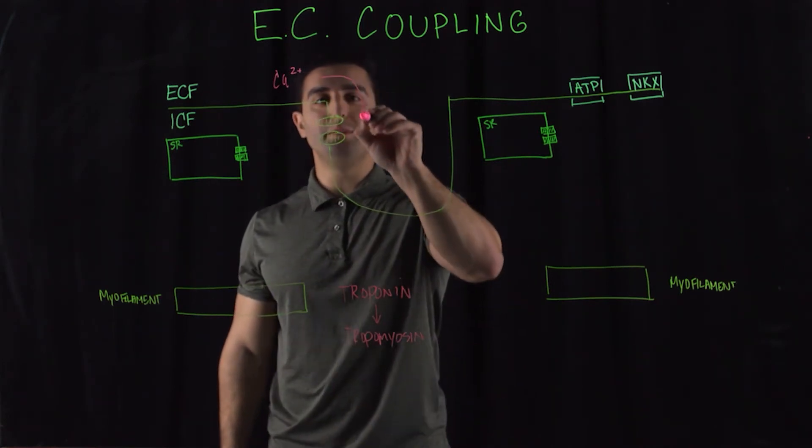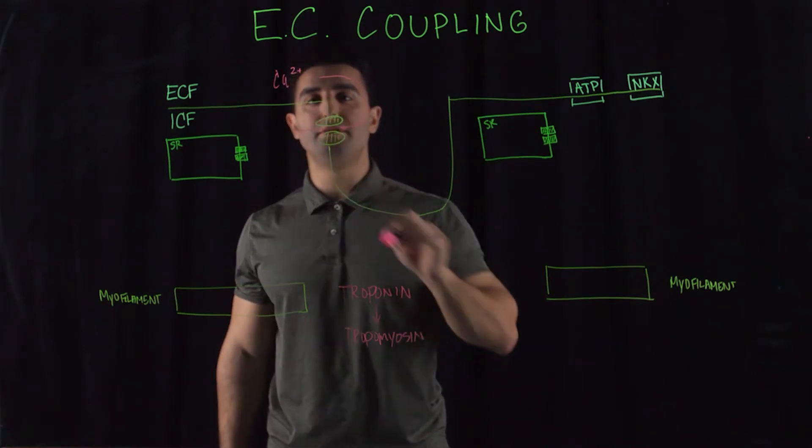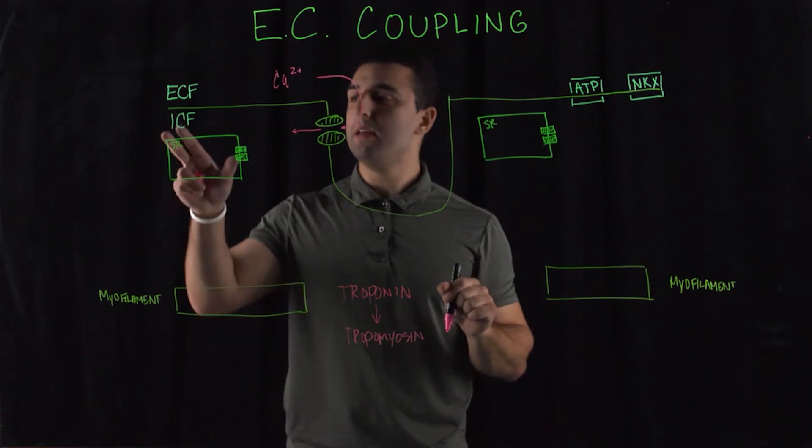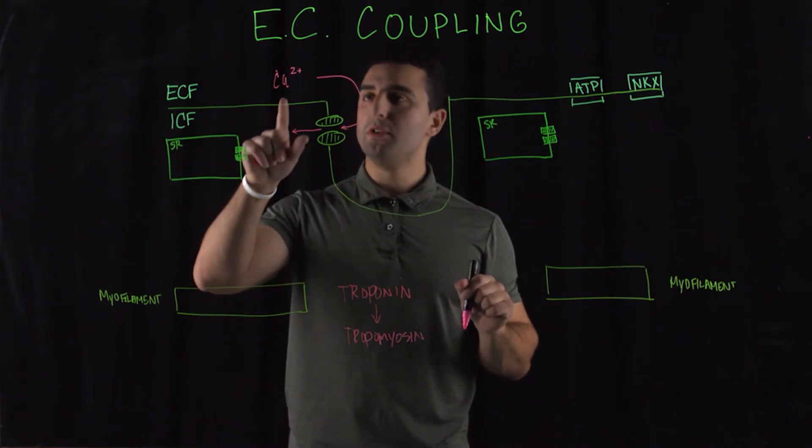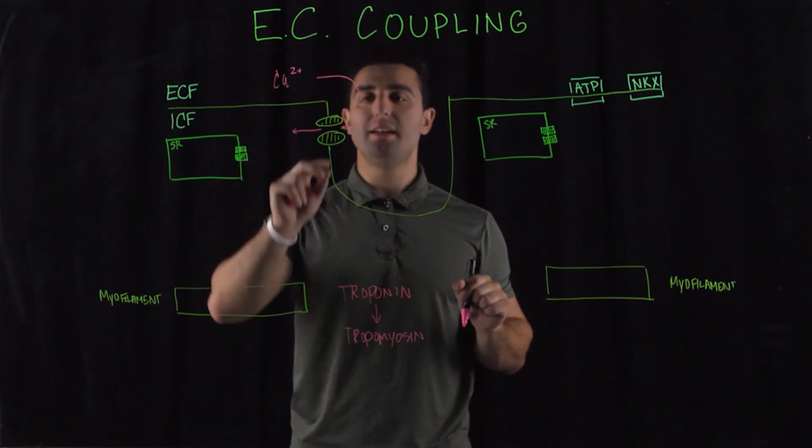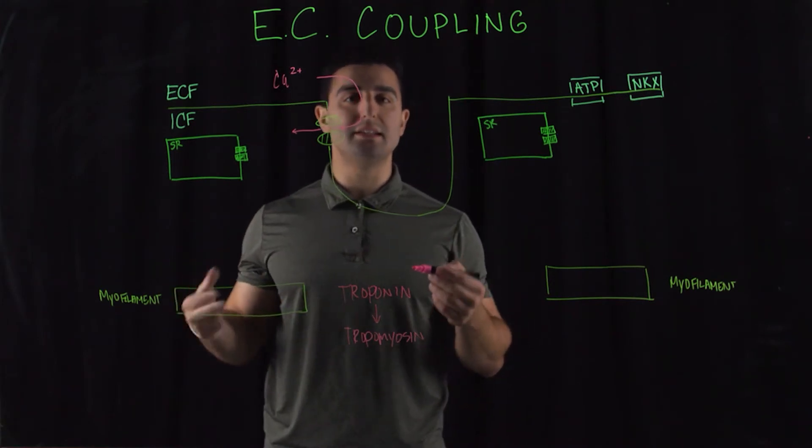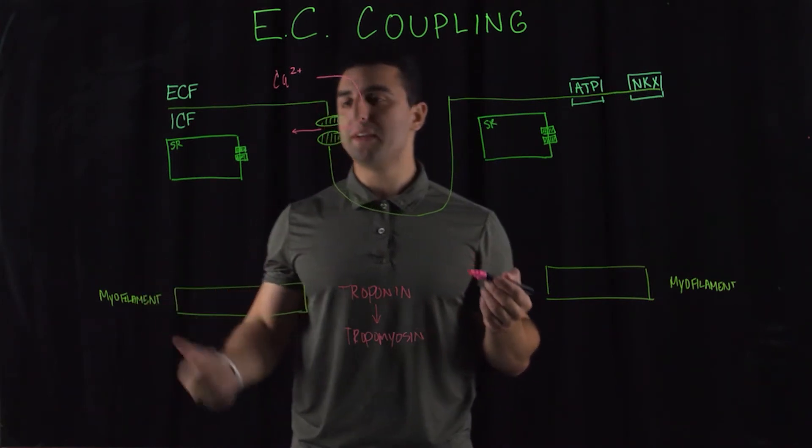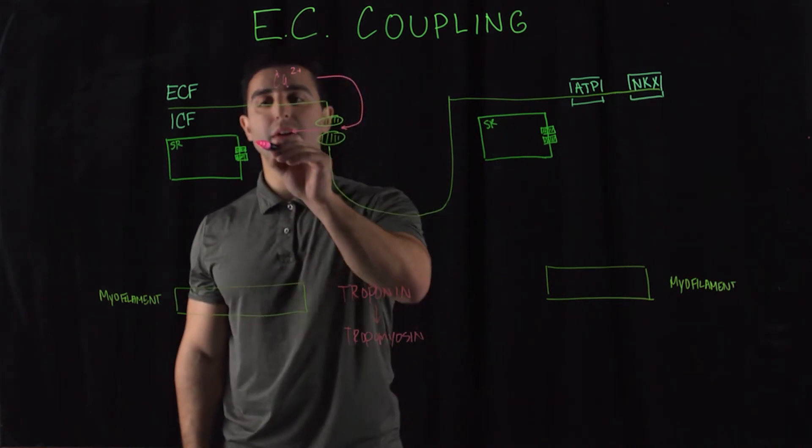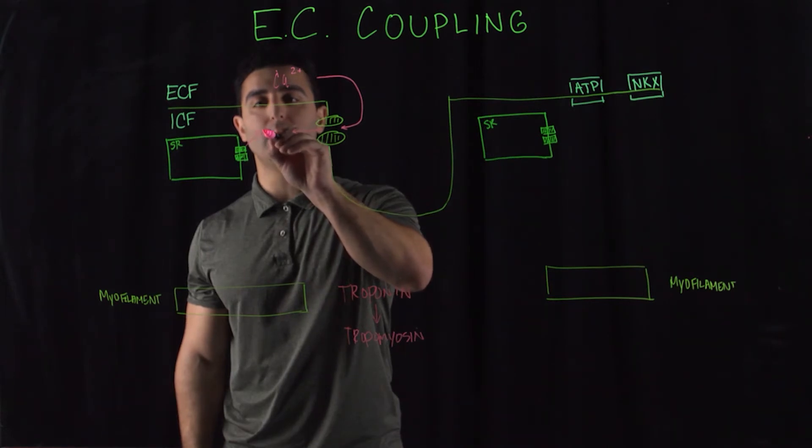When the calcium channels open, you have this passive influx of calcium that goes into the cell. Now, the concentration of calcium is so minuscule that it does not bind to troponin as efficiently, and so there is a need for an excessive surplus of calcium. So the extracellular calcium binds to this molecule, this receptor called the RYR receptor.